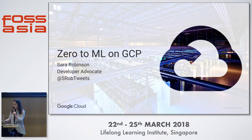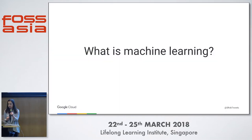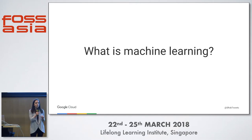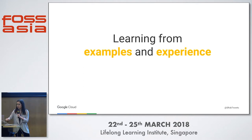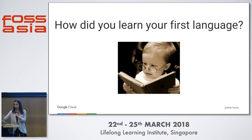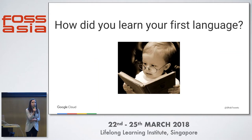You can find me on Twitter at srobtweets. I want to start out by talking about, at a high level, what is machine learning? Machine learning is essentially teaching computers to recognize patterns in the same way that our brains do. Over time, as we give machine learning models more and more data, they'll be able to improve as they're given more examples and experience. Does anybody remember how they learned their first language? Spoken language, not programming language.